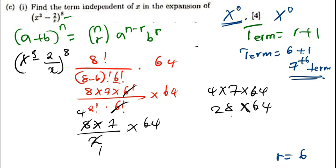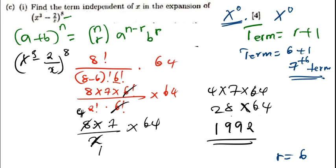So 28 times 64 — that is 1,792. So this is actually the term of that term that doesn't have x.